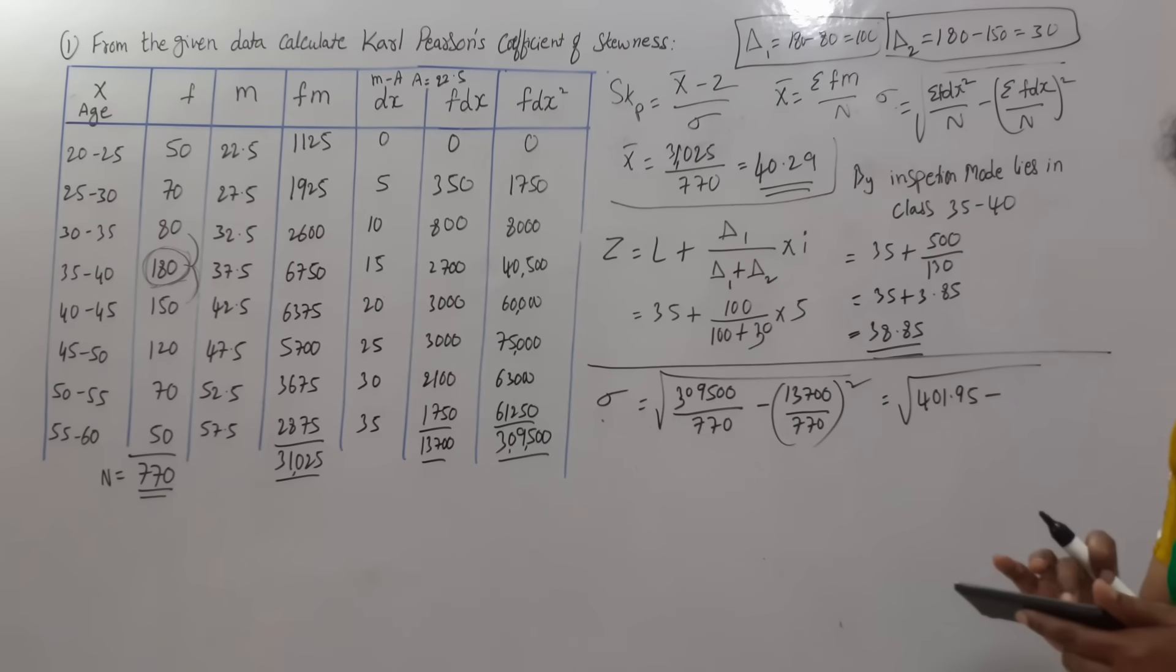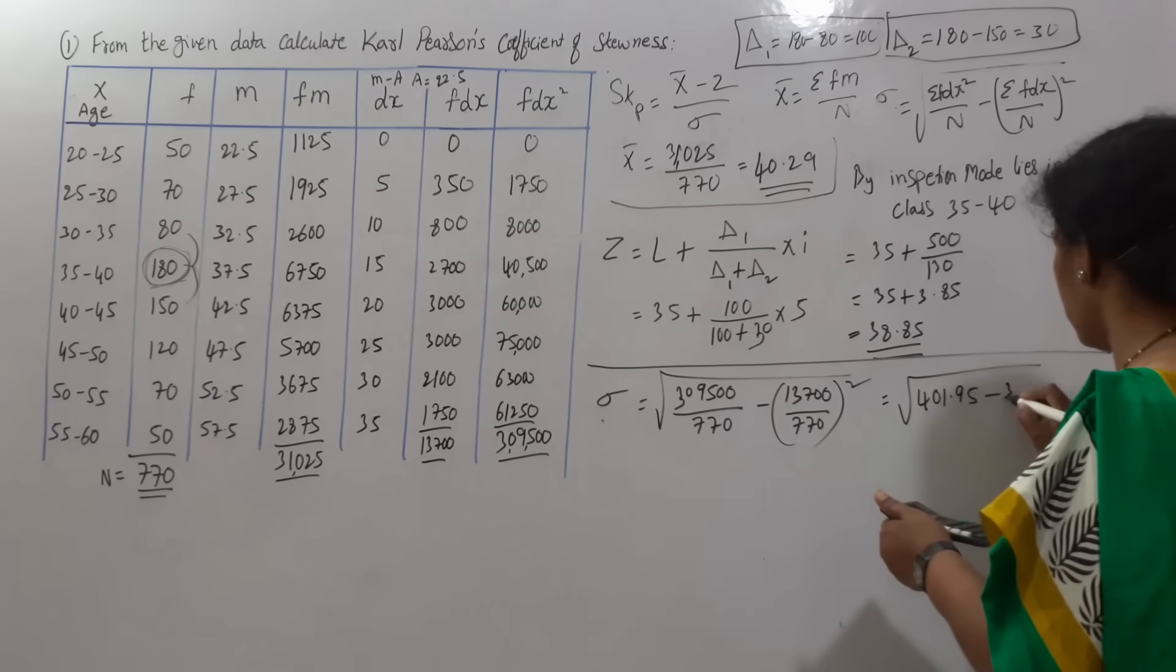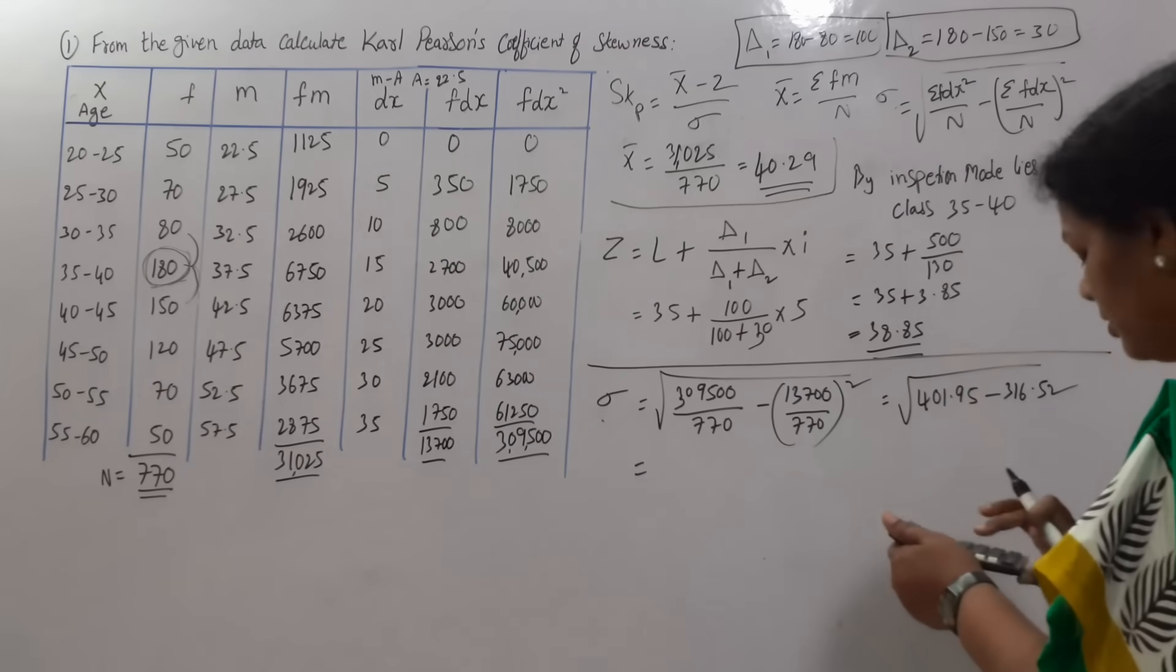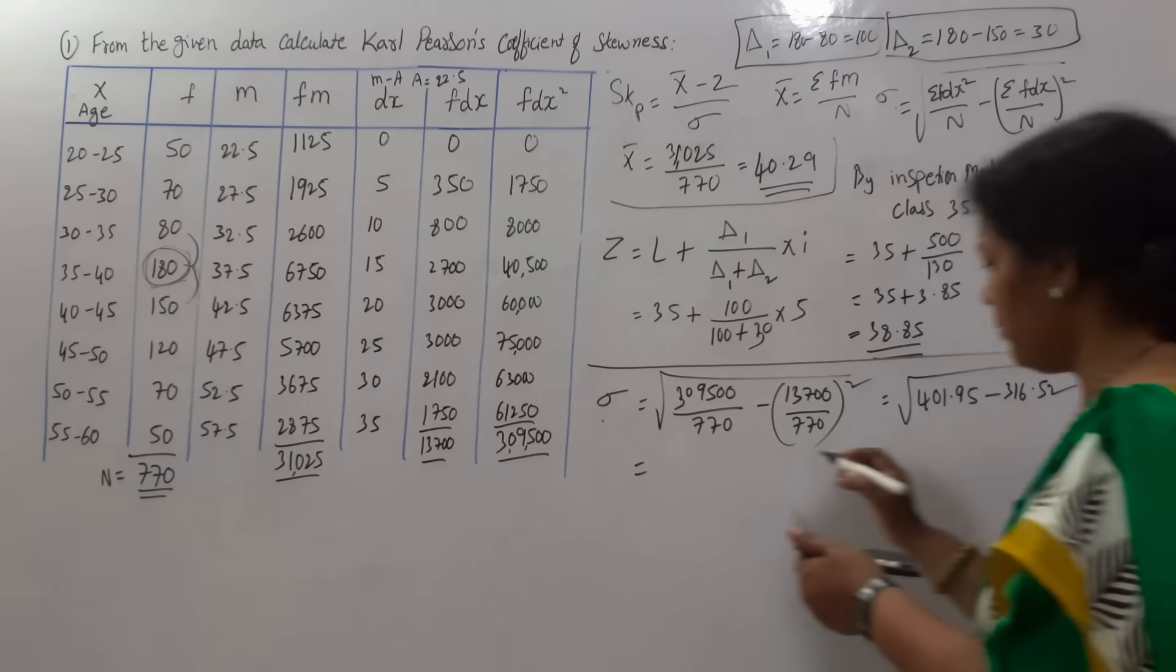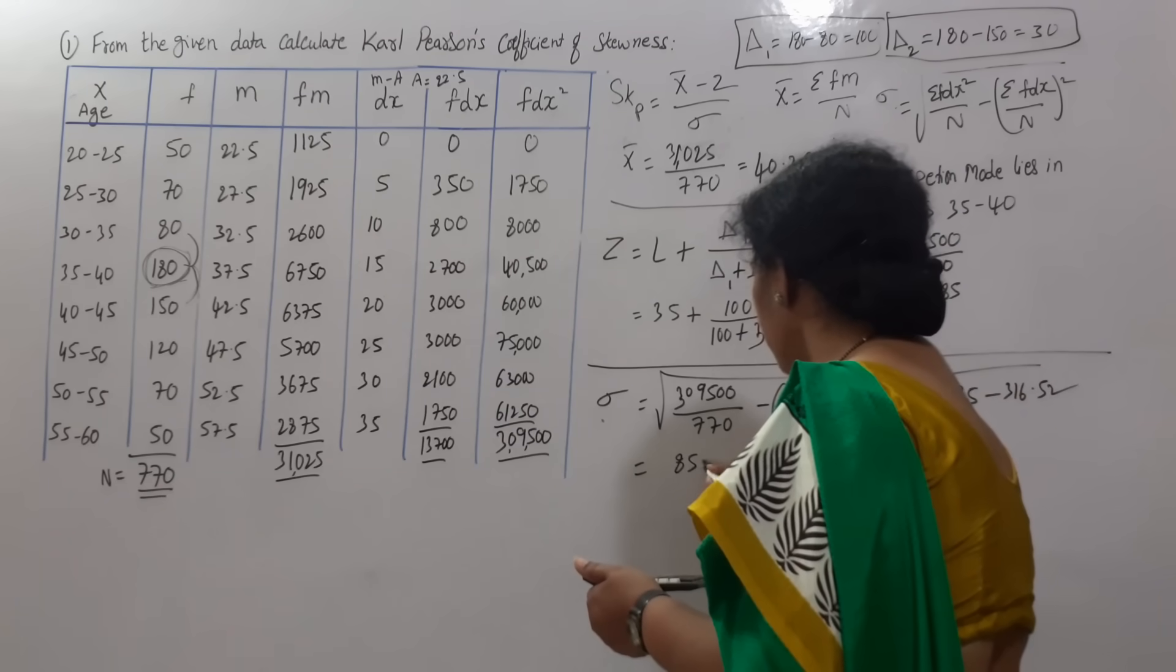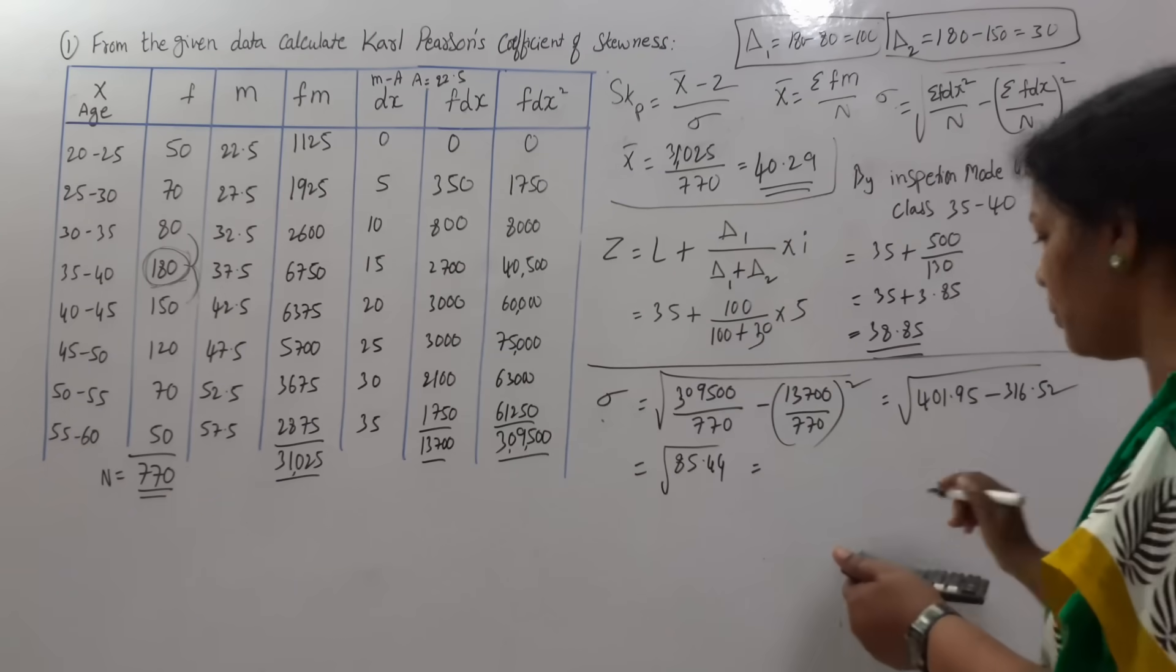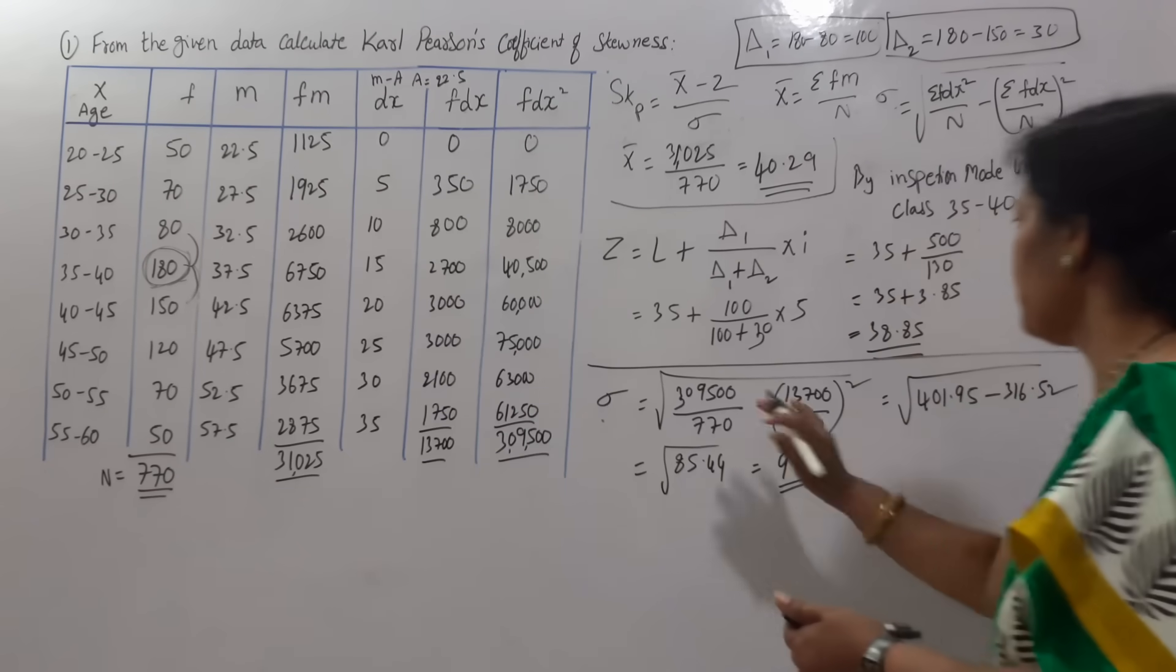17.79 into 17.79, multiplication because square is there, which comes to 316.52. If we minus this, 401.95 minus 316.52 comes to 85.44. This is under root. If we take out the root, it is 9.24. 9.24 is standard deviation.